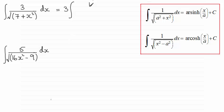So we've got 3 times the integral of 1 over the root of, and in here we can think of the 7 as just root 7 squared, and then we've got plus x squared. And that's integrated with respect to x.